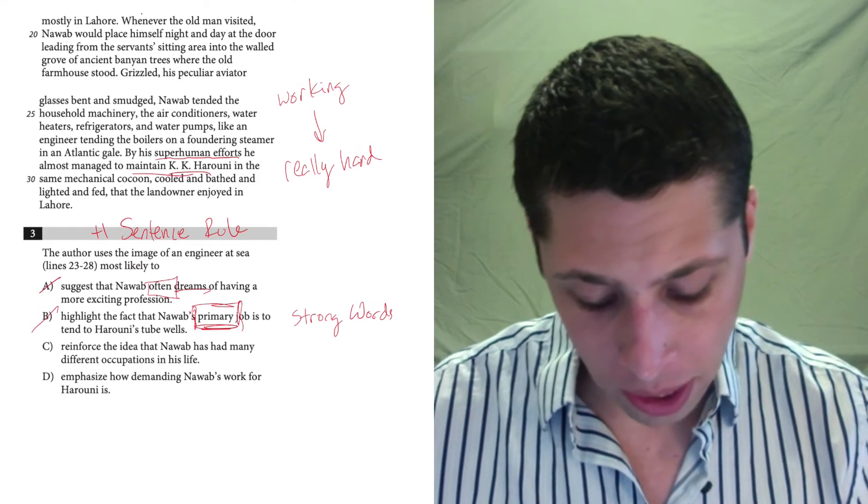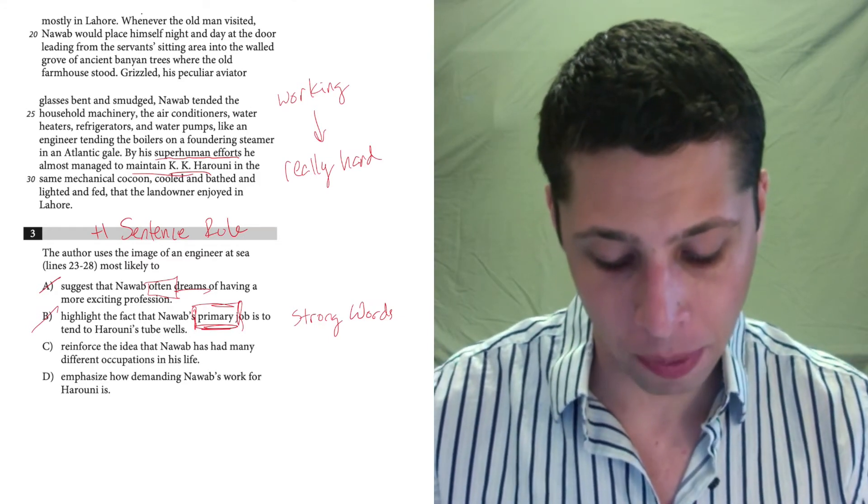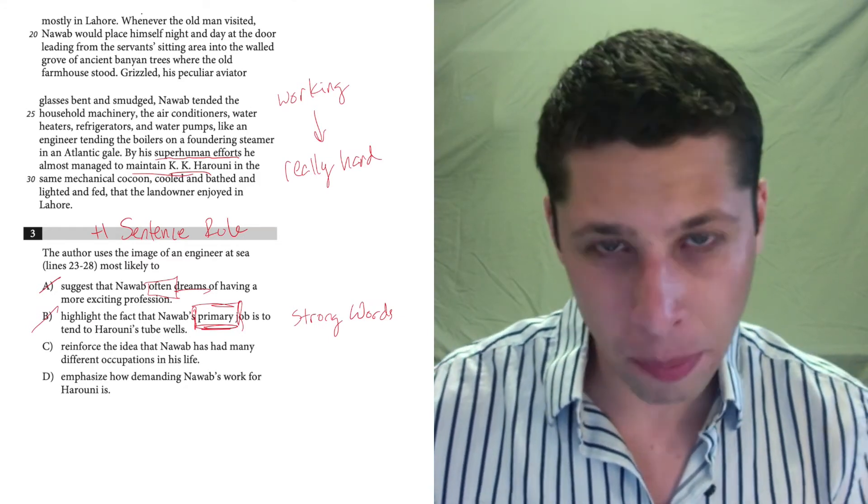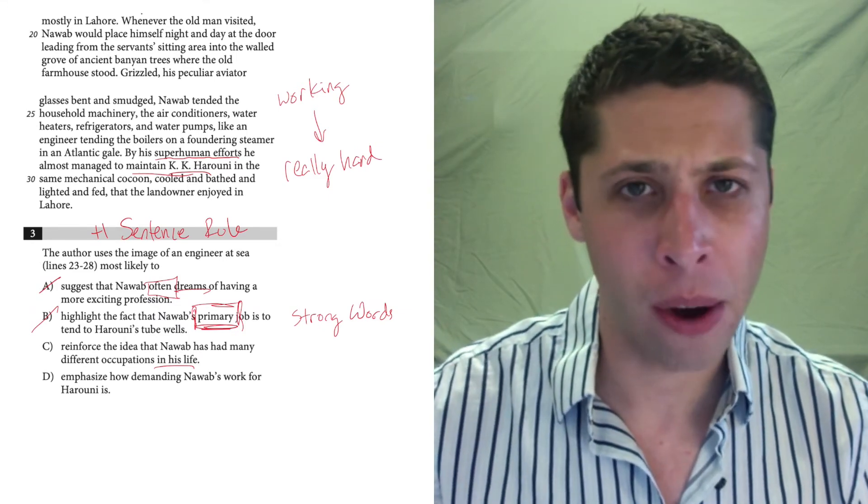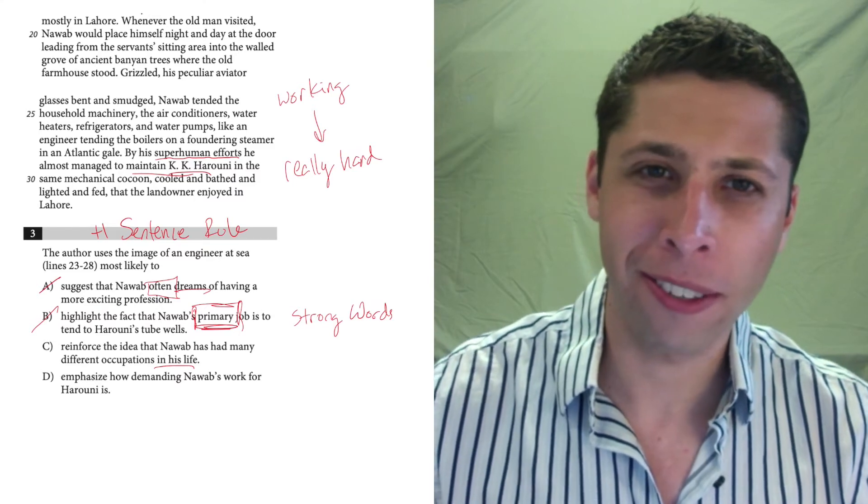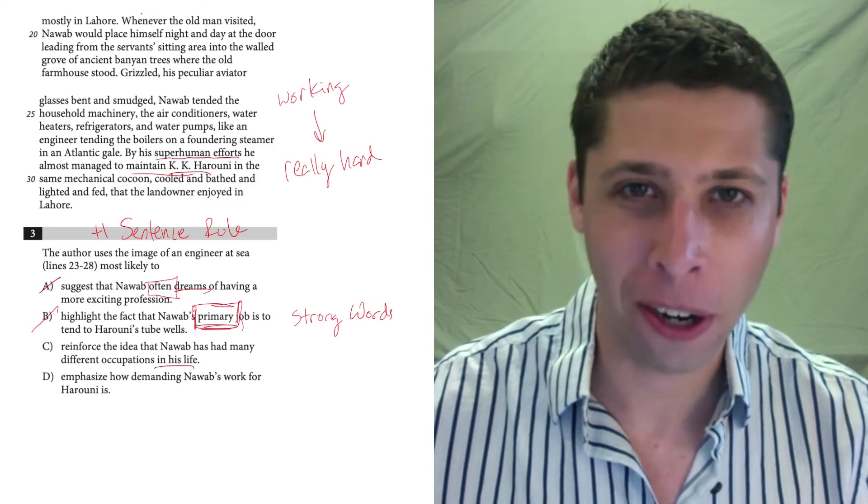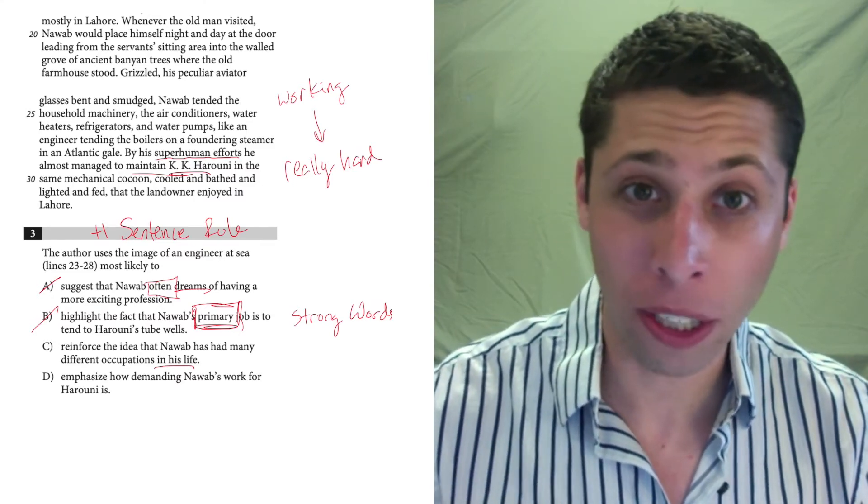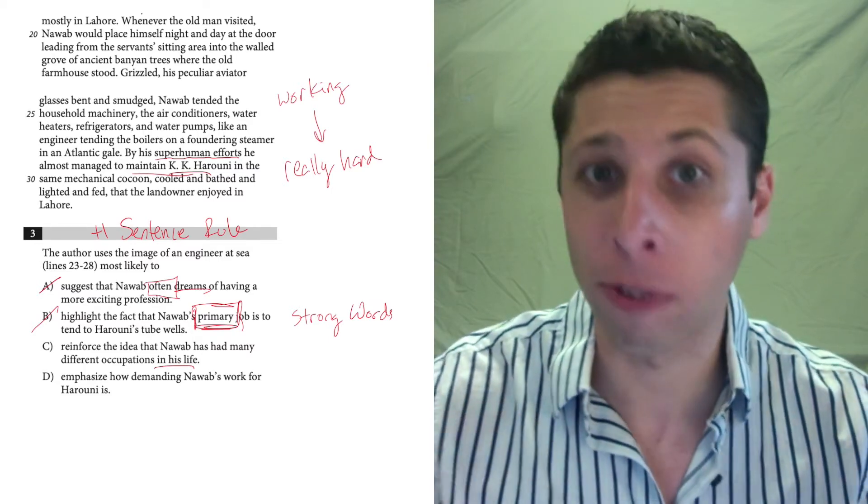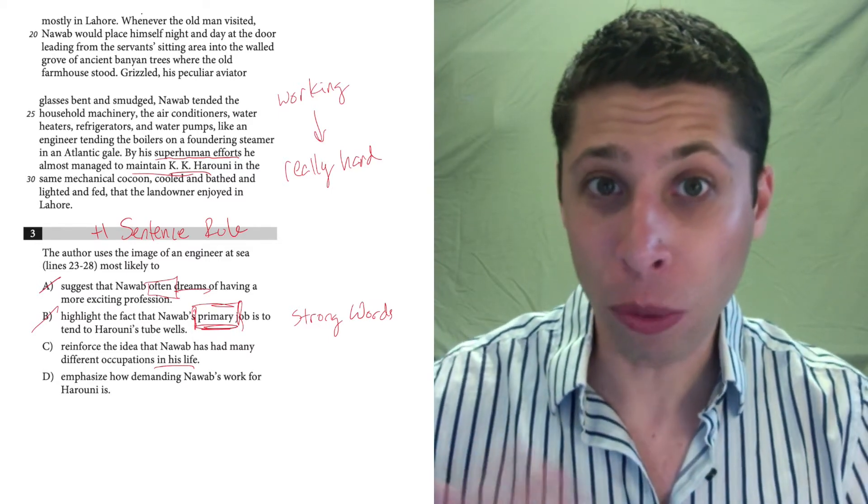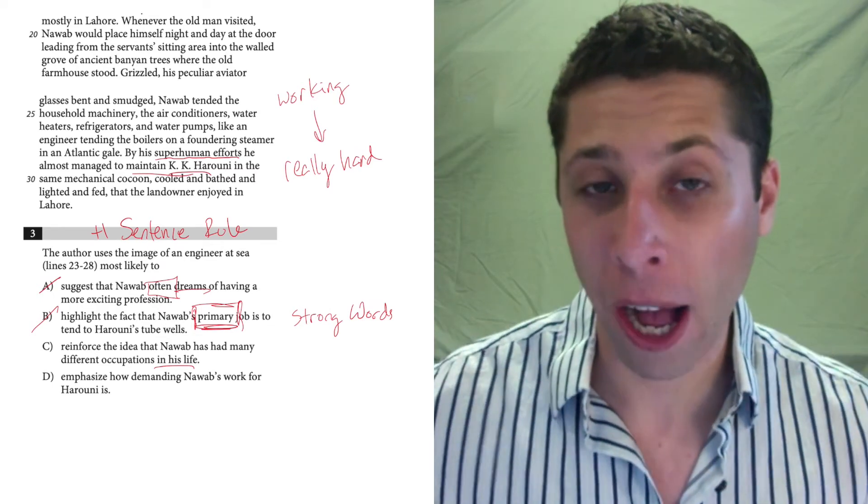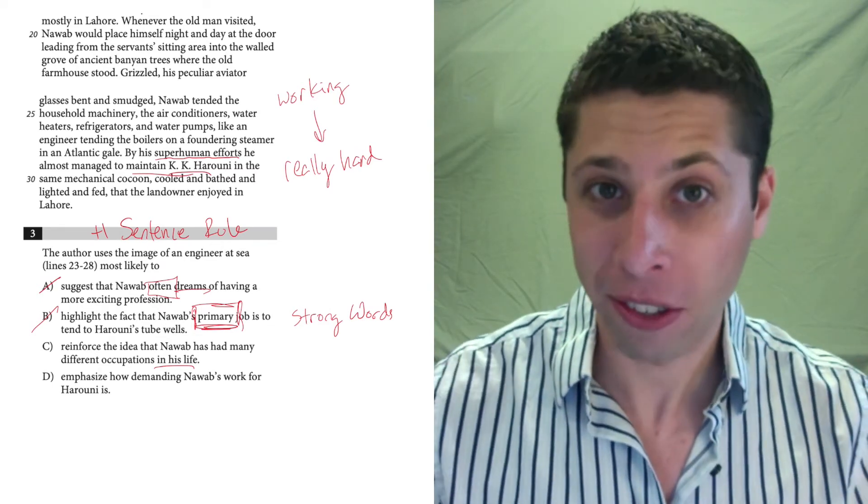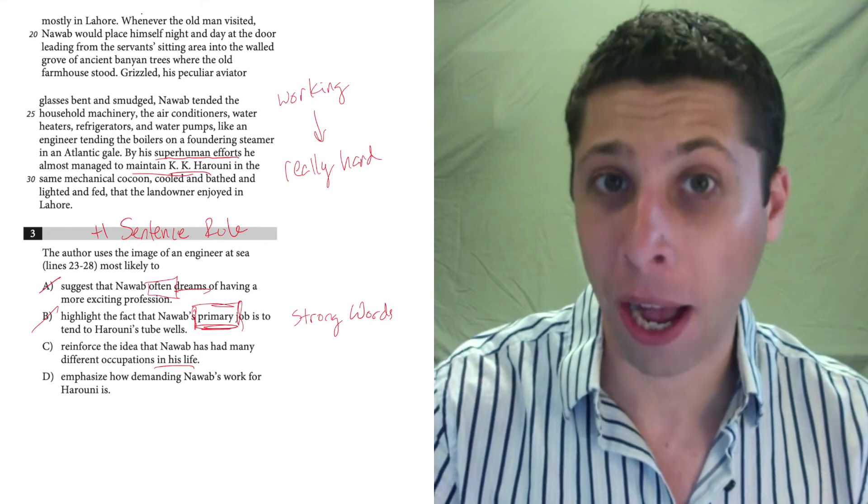C. Reinforce the idea that Nawab has had many different occupations in his life. Well, this isn't about his past, certainly not. This is about what he's doing right now. And the other piece of this is those aren't different occupations. Those are the same occupation. He's working for this guy Haruni, or however you pronounce his name. And so he's doing a lot of things for this guy, not multiple jobs over multiple years. This is what he does now for this one job that he has.